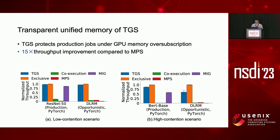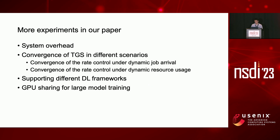To show the benefit of transparent unified memory, we conduct experiments when the total required GPU memory exceeds the GPU memory capacity. Because TGS prioritizes memory allocation from different jobs to prevent contention, TGS achieves up to 15 times speedup for the opportunistic job compared to MPS. Our paper includes many more experiments covering system overhead, convergence of TGS in different scenarios, supporting different DL frameworks, and GPU sharing for large model training.